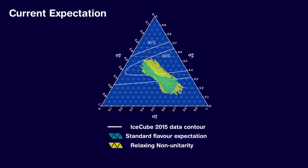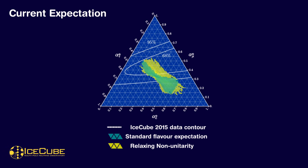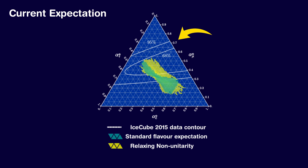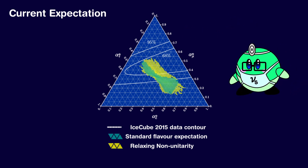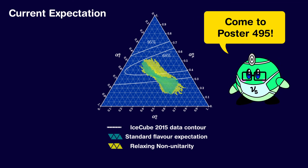So where are we today? Current experiments, such as the IceCube Neutrino Observatory, seem to be limited due to the low number of astrophysical neutrinos we've observed. The current data contour is covering most of the expectation for the cases of unitarity and non-unitarity in the PMS matrix. But with upcoming experiments, such as IceCube Gen2, this technique will become complementary to the many ways we search for sterile neutrinos.